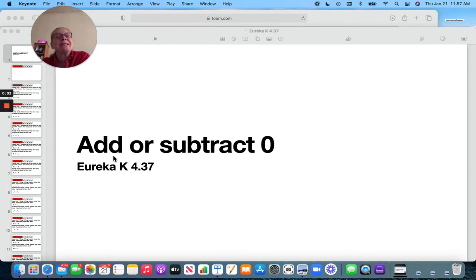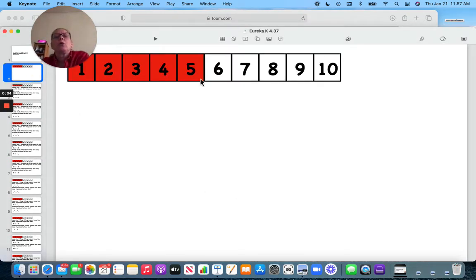Hi, we are going to add or subtract zero, and we're going to use this number line here. The first five are red, the second five are white, so we have ten.